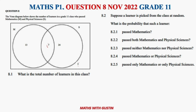Let's have a look at Question 8 — it was a probability question with a Venn diagram. The diagram shows the number of learners in a Grade 11 class who passed Mathematics and Physical Science. The ones here passed Maths only, these ones passed both Maths and Physics, these ones passed Physical Science only, and these ones outside passed neither.